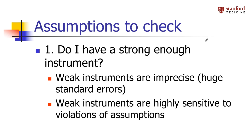Consider a randomized trial with non-compliance where the intention-to-treat estimate is 1.5, but the difference in proportion receiving treatment between treatment and control groups is incredibly small — like 0.1%. That's going to effectively reduce our sample size to an incredibly small number, giving a very imprecise and unreliable estimate. This assumption is something that's easy to check: you can look at the exposure levels in the different instrument groups and compare them, and you can also look at the R-squared and F-statistic from the first-stage model in your two-stage regression.